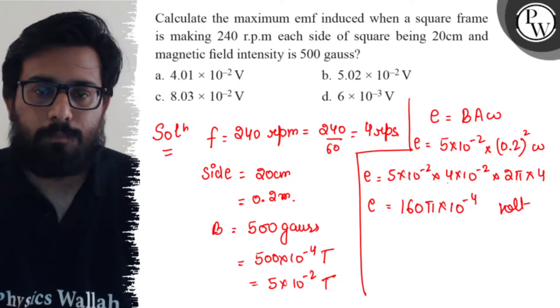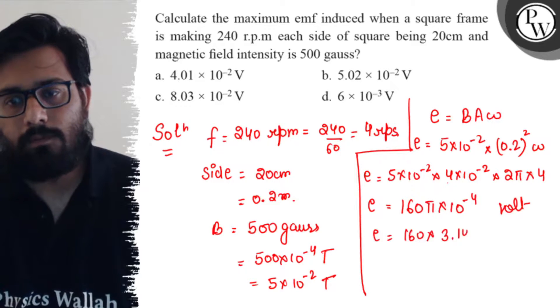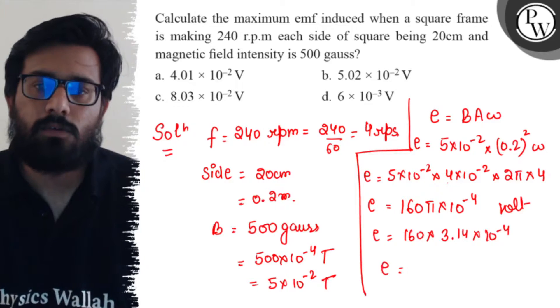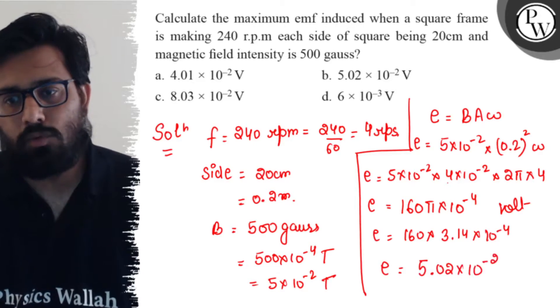Put the value of π as 3.14. So 160 × 3.14 × 10^-4. Solving this, we will get the value of 5.02 × 10^-2 volt.